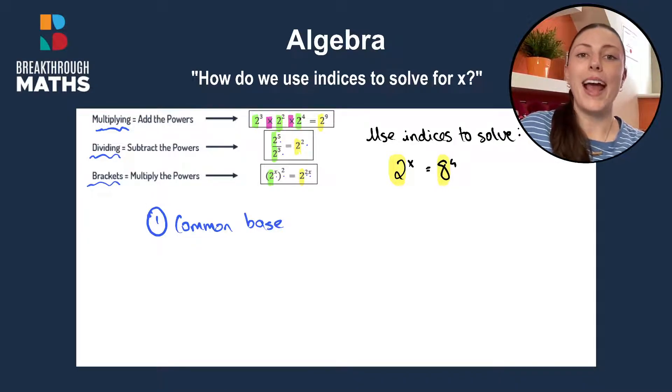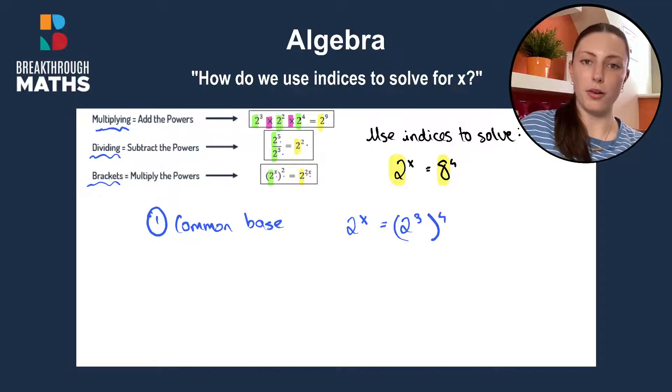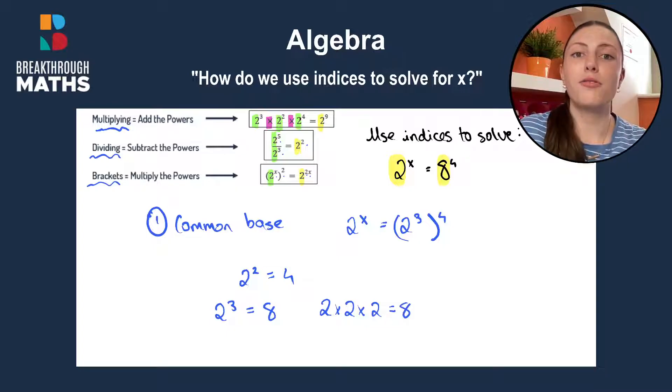So we can bring 8 to 2 to the power of 3. We'll convert 8 to 2 to the power of 3 and put that to the power of 4. If you weren't sure how I got that, 2 to the power of 2 is 4 and 2 to the power of 3 is 8, because 2 by 2 is 4 by 2 is 8.